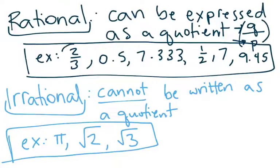For example, 2 thirds is a rational number. If the number can be written as a fraction, then it is rational. 0.5 is a rational number because that's the same as saying 5 over 10 or 1 half. Even 7.333, where the 3's go on forever, is a rational number because it can be written as 7 and 1 third.